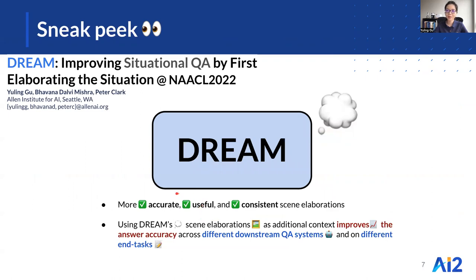Our results show that our model DREAM is able to create more accurate, useful, and consistent scene elaborations than a representative state-of-the-art zero-shot model. Remarkably, using DREAM's scene elaborations as additional context improves the answer accuracy across different downstream QA systems and on different end-tasks.